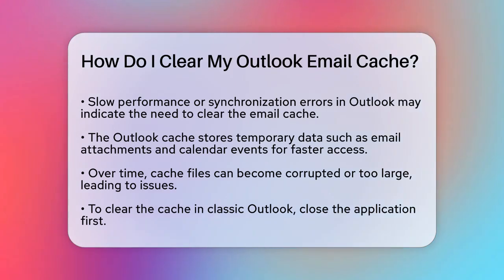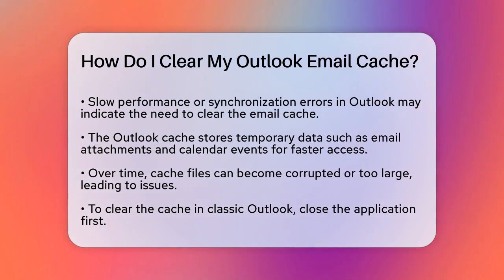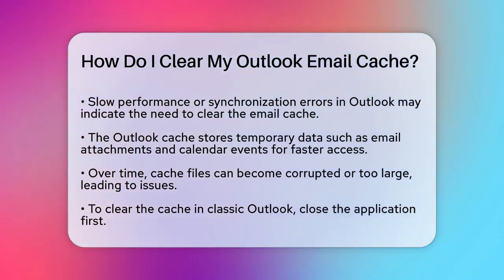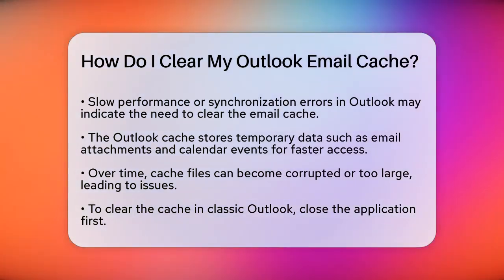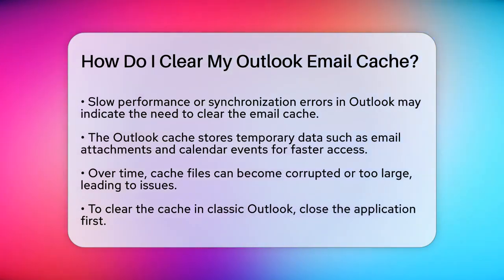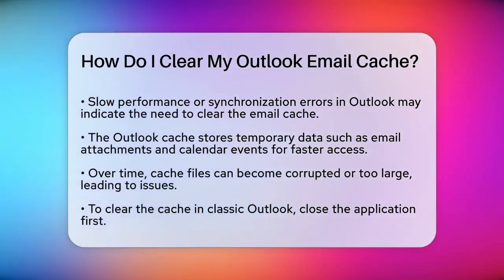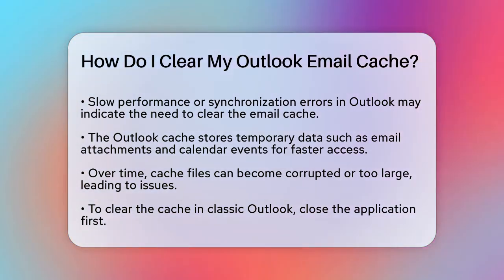First, it's important to understand what the Outlook cache is. The cache stores temporary data like email attachments, calendar events, and address lists to speed up common tasks. However, over time, these cache files can become corrupted or too large, causing problems.